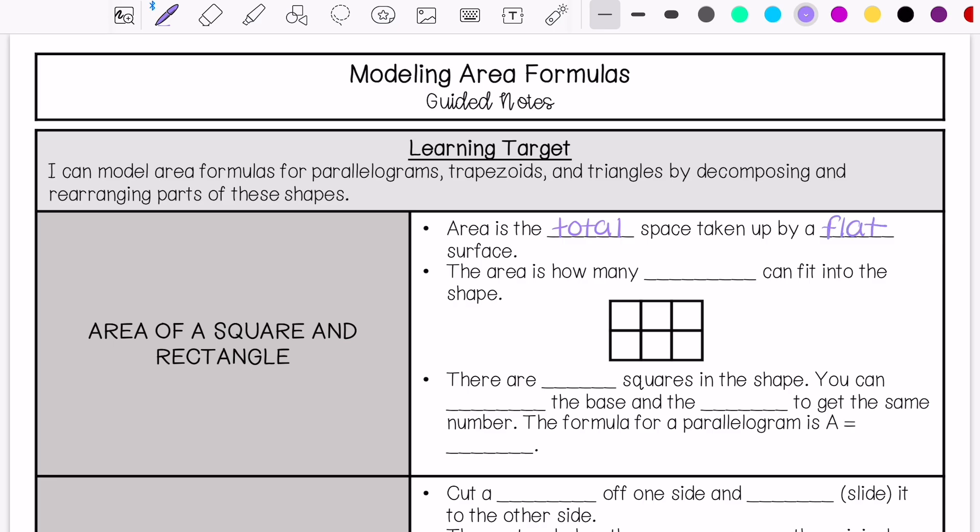The area is how many squares can fit into the shape. If you look at this picture, for example, there are 6 squares in this shape. You can also multiply the base and the height to get the same number. You have 3 at the base, 2 at the height, 3 times 2 equals 6.